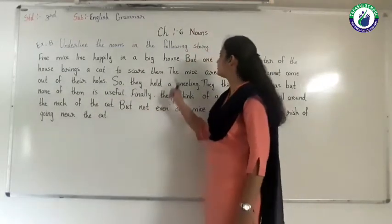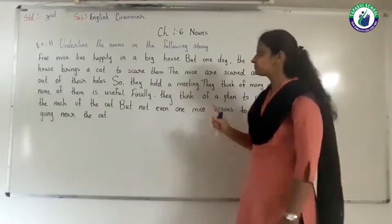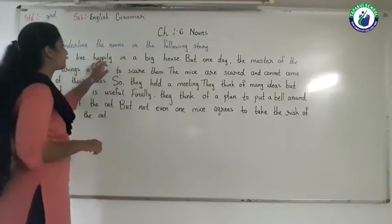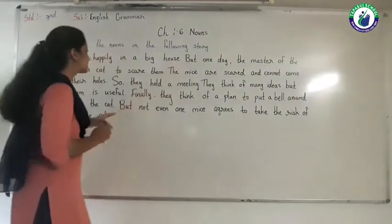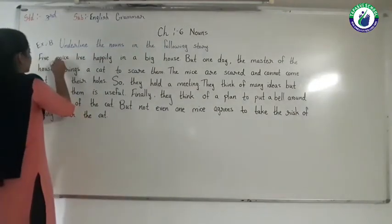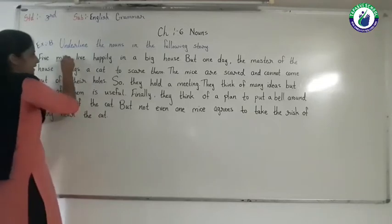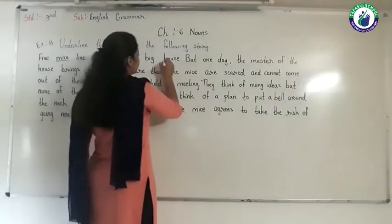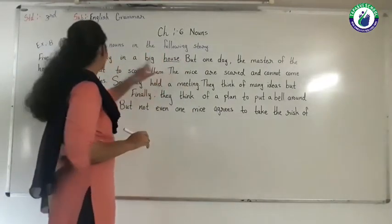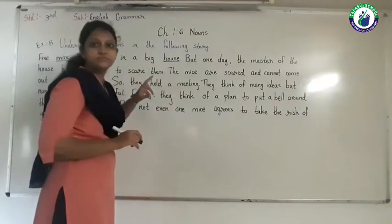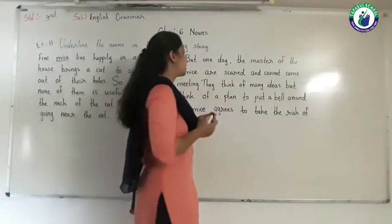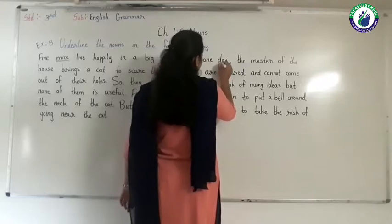Now from this story we have to find nouns. Five mice live happily in a big house. From this sentence which words are nouns? The word mice is called a noun. The word house is called a noun. House is the name of a place. Mice are called animal. Next — but one day — the word day also we have to include in noun.